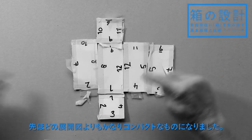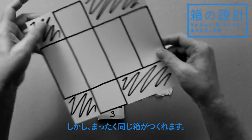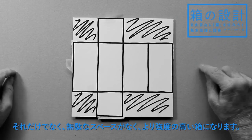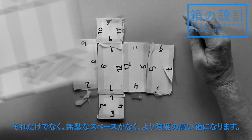So this is a much more compact net than before, but it will still fold up to make the same box, and look, there's much less waste. It's a smaller net, it's stronger, and there's much less waste.